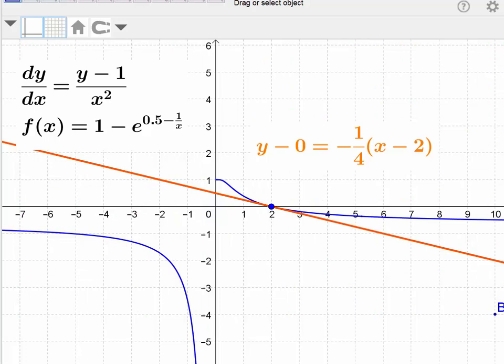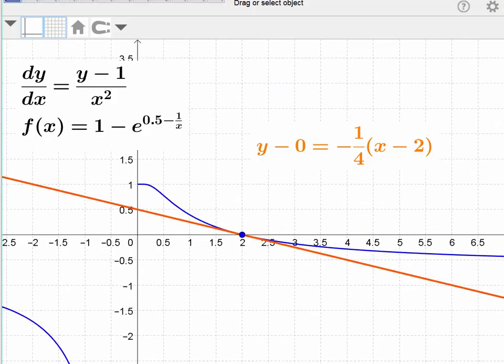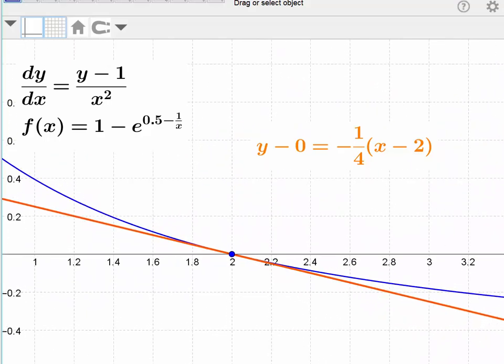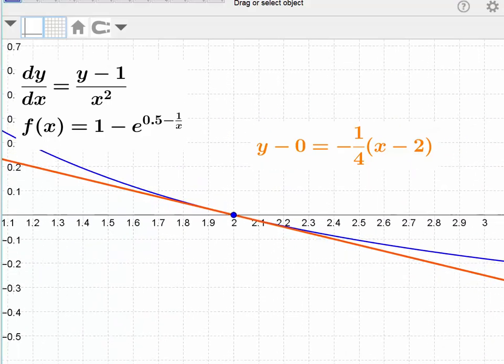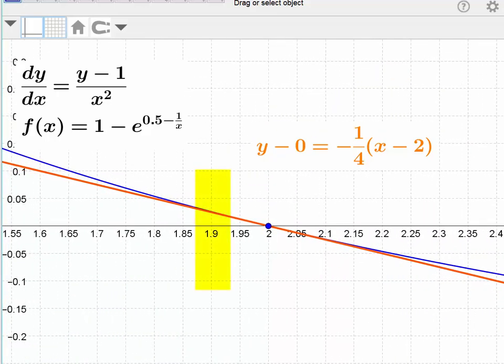And the observation to be made here is that if we zoom in on that point of tangency, if we zoom in on the point of tangency, notice that the tangent line is a pretty good approximation for the curve itself. Especially when you look at the x value of 1.9, it's really hard to distinguish the difference between the curve and the tangent line.